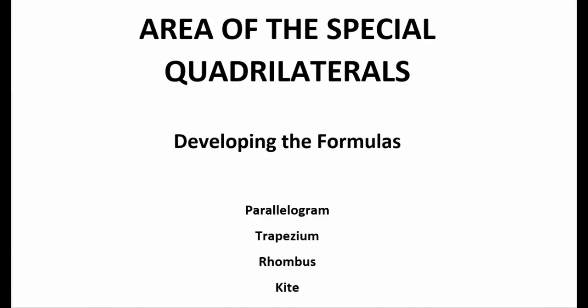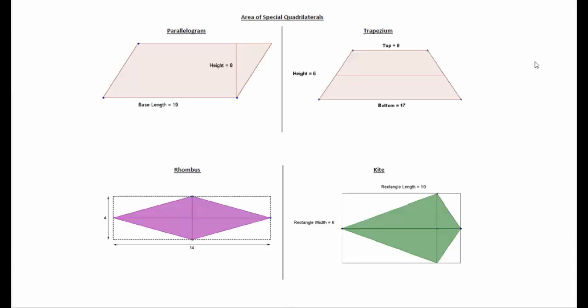Hello, this lesson is all about developing the formulas of our special quadrilaterals: our parallelogram, trapezium, rhombus, and kite. To do this, we've got a couple of GeoGebra applets organized that will manipulate parallelograms, trapezium, a rhombus, and a kite into some plane shapes so that we can work out their area nice and easily.